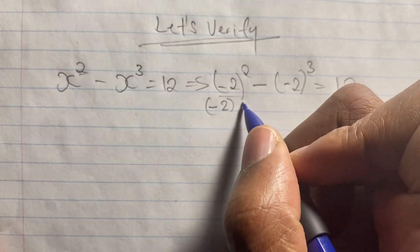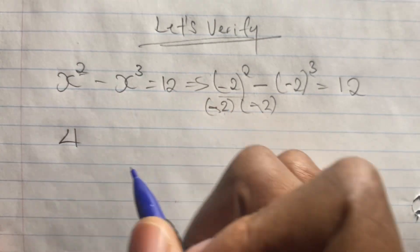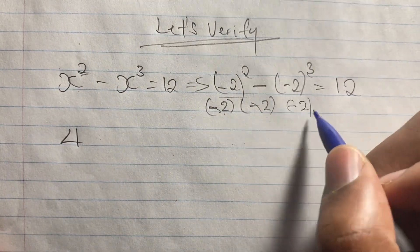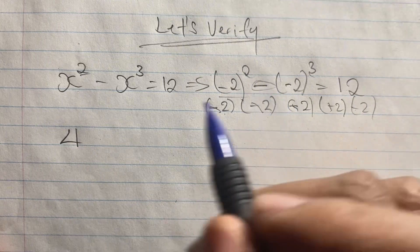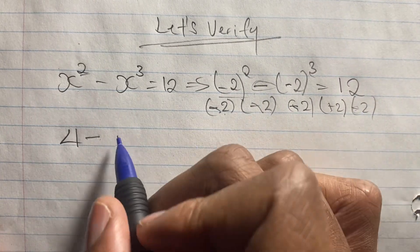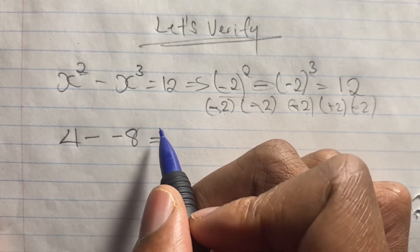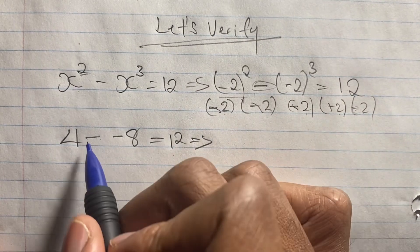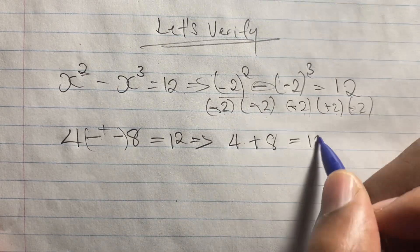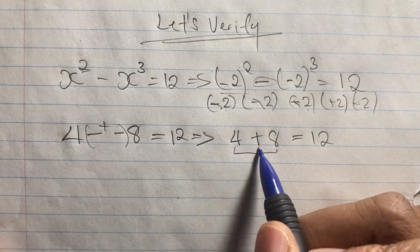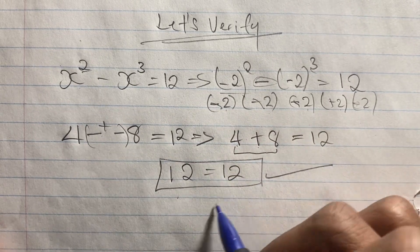Negative 2 squared equals negative 2 times negative 2, and negative times negative gives positive, so that's positive 4. For negative 2 cubed: negative 2 times negative 2 times negative 2 — two negatives cancel leaving one negative — so that's negative 8. We have 4 minus negative 8, which gives 4 plus 8 equals 12. Our solution is verified: x is indeed equal to negative 2.